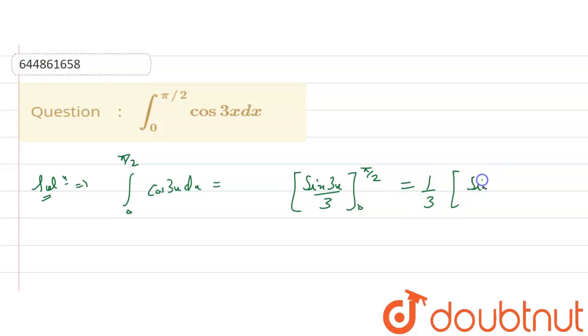And that is equals to sin 3. Now we put the limit, when we put upper limit sin 3 pi by 2 minus sin 0. Now 1 by 3, sin 3 pi by 2 is minus 1 minus 0.